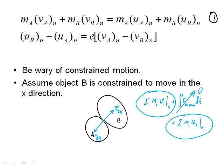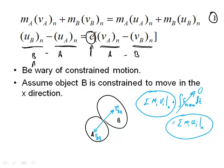Finally, the definition of the coefficient of restitution still holds, and it only applies in the normal direction. In direct central impact there was only a normal direction, but now in oblique central impact the coefficient of restitution is valid only in the normal direction. So the velocity of B normal after minus the velocity of A normal after equals the coefficient of restitution times the velocity of A normal before minus the velocity of B normal before. That is equation four.